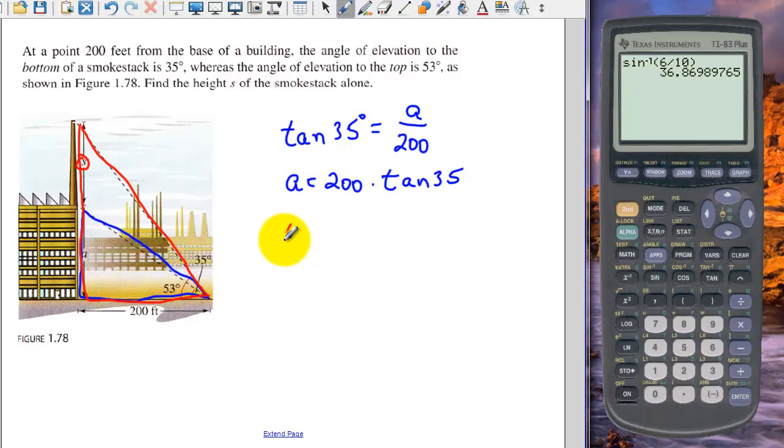So again, the tangent of 53 degrees equals the opposite, S plus A over adjacent. And we can solve that for S plus A.